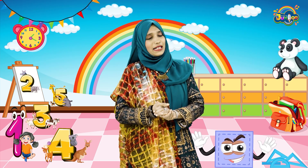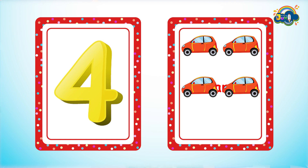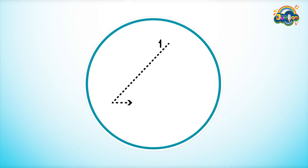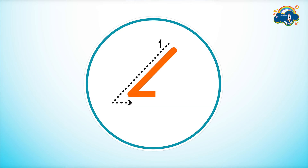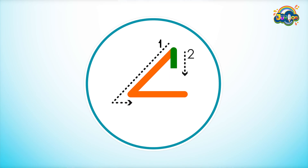Next, number 4 — 4 cars. So let's write number 4. For writing number 4, you should draw a small slanting line and a small slipping line from top to the middle. Now draw a standing line from top to the bottom.